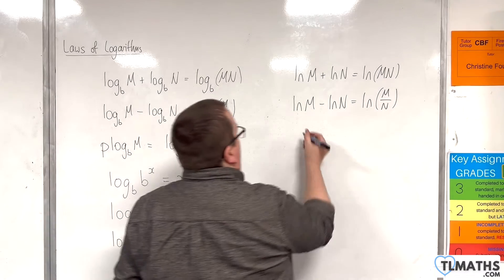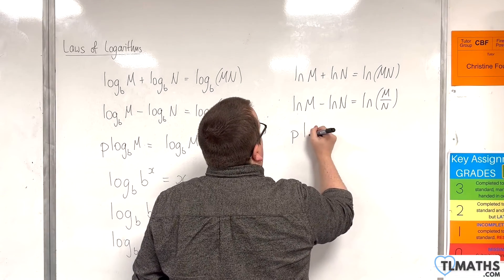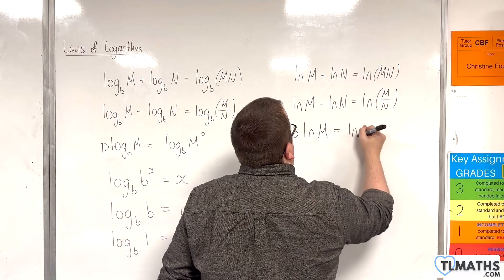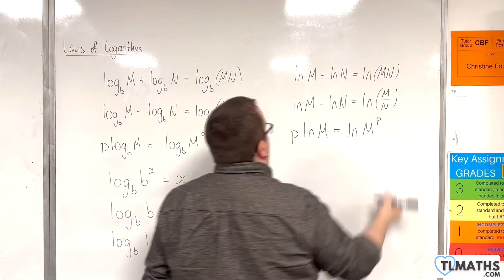Then we've got the power rule: p times the natural log of m will be equal to the natural log of m to the power of p.